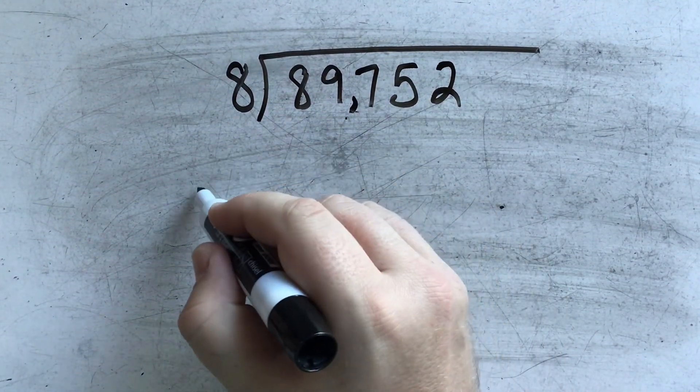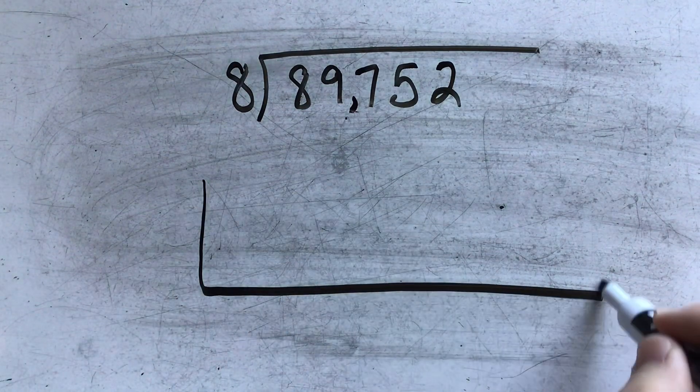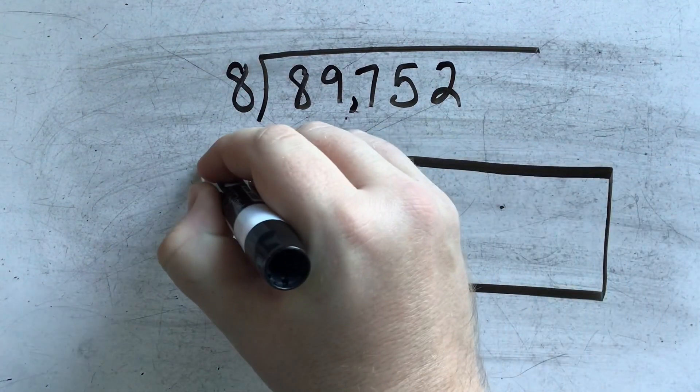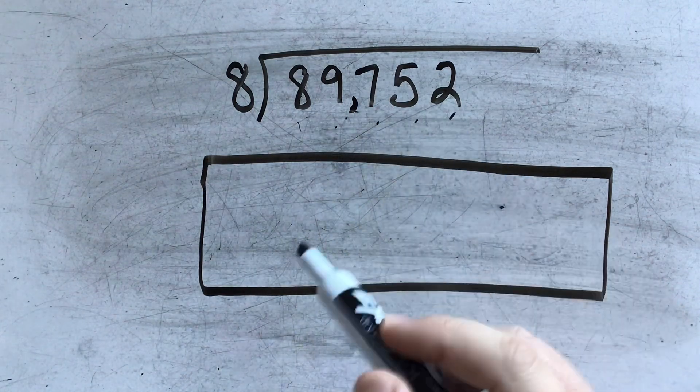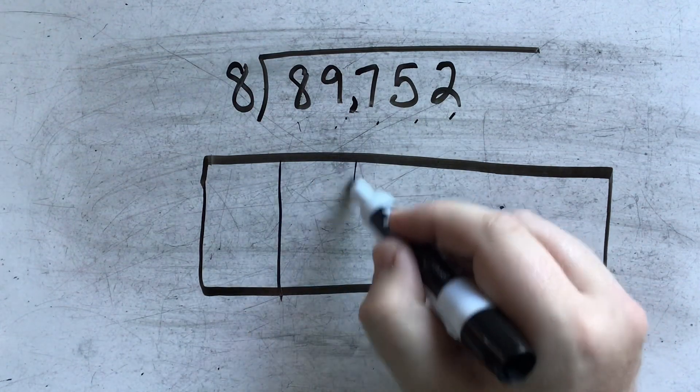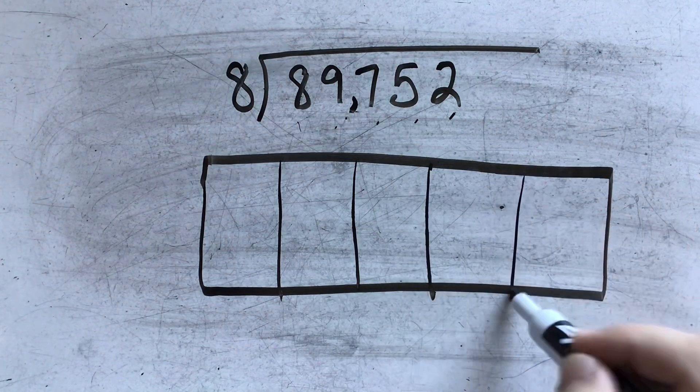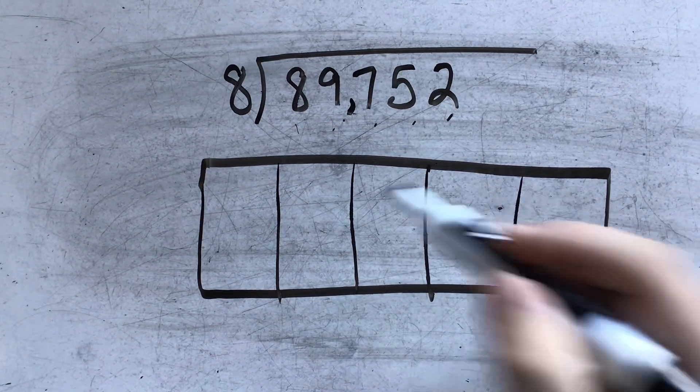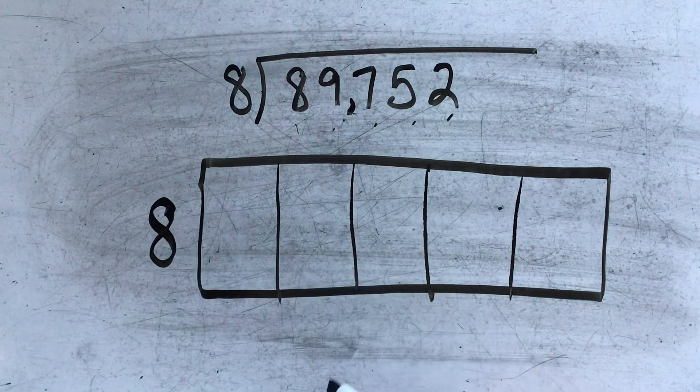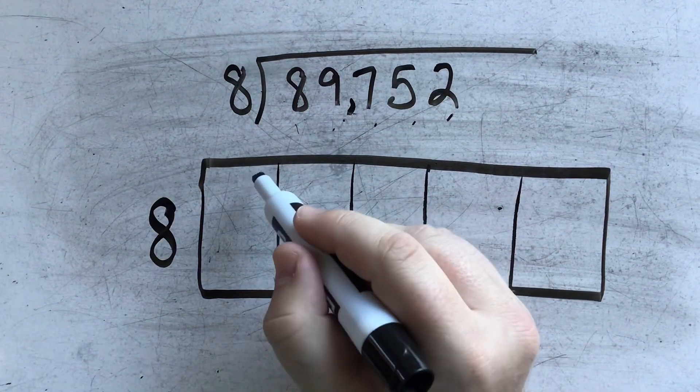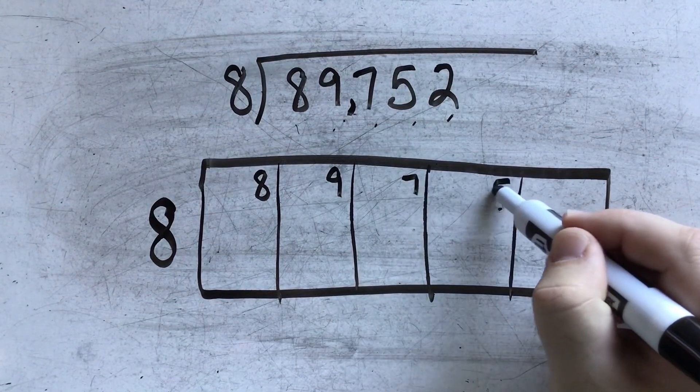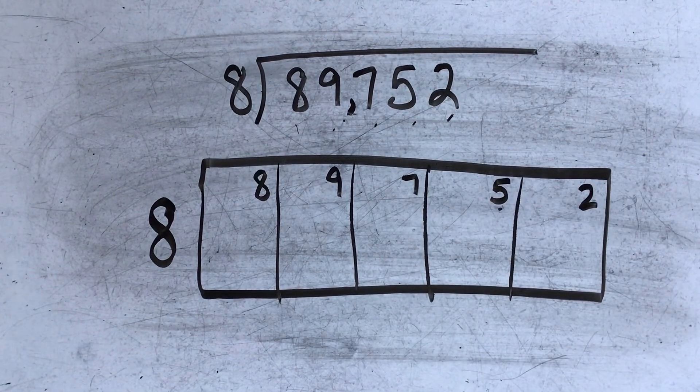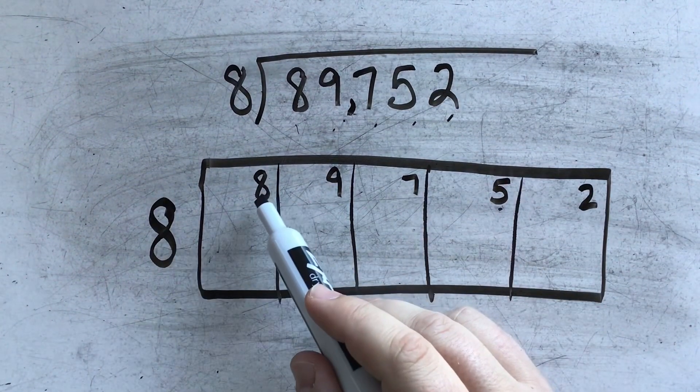89752 divided by 8. Again, what I'm going to do is set up my box. I have 1, 2, 3, 4, 5 digits that I need to include. So I need 5 boxes in my problem. The 8 that I'm dividing by comes out here. And then each digit goes in the top right-hand corner. Just like that.